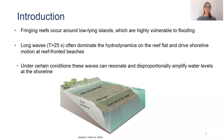Fringing reefs occur around low-lying islands which are known to be highly vulnerable to flooding. Here you can see an example of a low-lying island with a beach and fronted by a fringing reef with the reef flat, the reef crest, and a sharp fore reef.